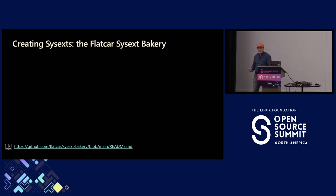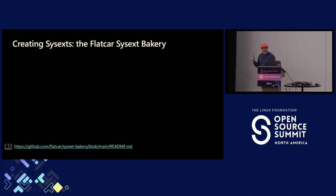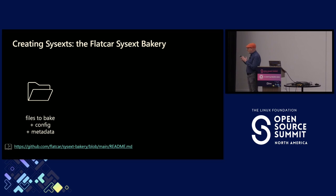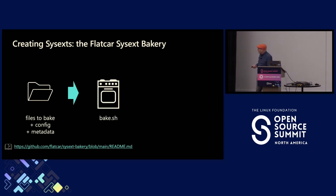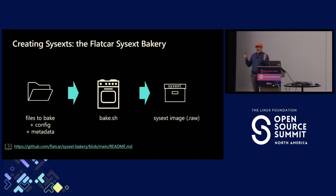Sysexts sound like a good idea — you want to go make one? How do you do that? We have, as part of the Flatcar repo, something called the sysext bakery. You can go there and check out a lot of recipes, and it'll explain how you go about making your own sysext. You start with which files you want to bake into the sysext, there's some config and metadata which goes with it. We have a script called 'bake' which turns that into a sysext image.